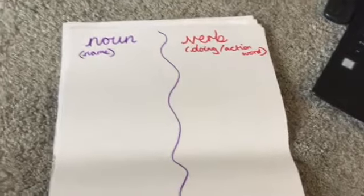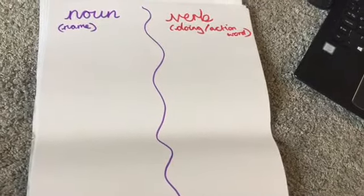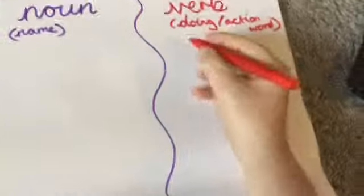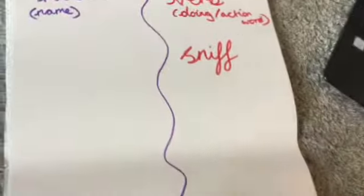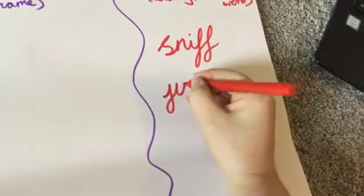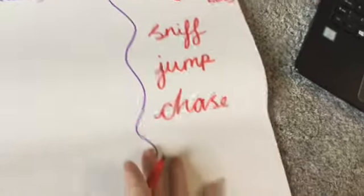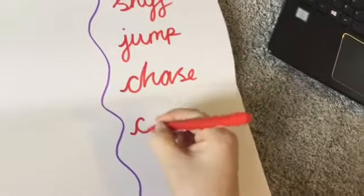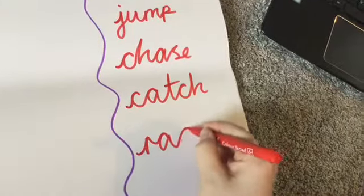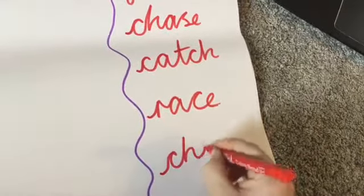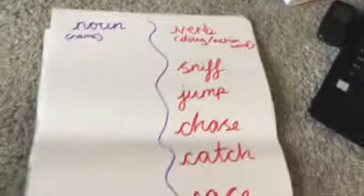Does it bark? Does it race? As many verbs as you can. When I think of a dog, I think of sniff, jump, chase - dogs chase things - they catch things, they race, and they chew. Definitely chew. These are the verbs I have chosen to describe a dog.